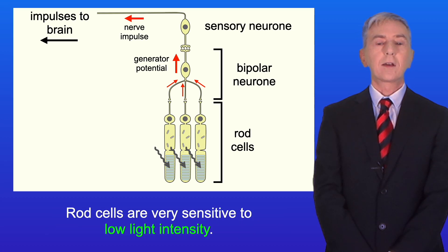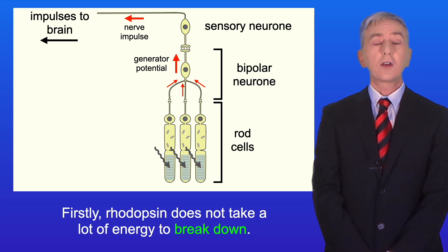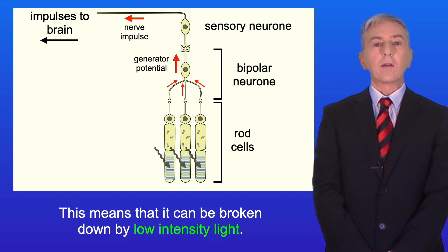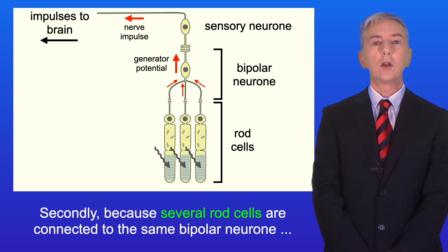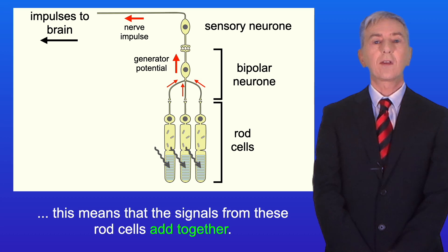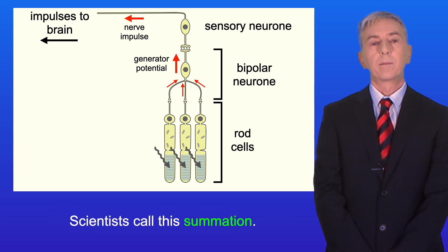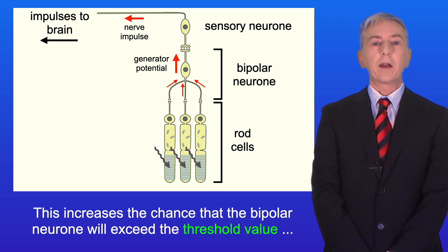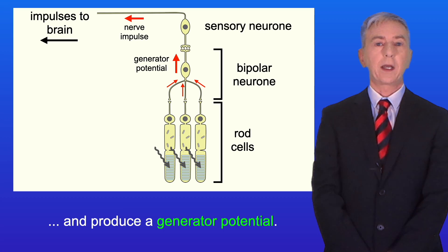Rod cells are very sensitive to low light intensity, and there are two reasons for this. Firstly, rhodopsin does not take a lot of energy to break down, meaning it can be broken down by low intensity light. Secondly, because several rod cells are connected to the same bipolar neuron, the signals from these rod cells add together — scientists call this summation. This increases the chance that the bipolar neuron will exceed the threshold value and produce a generator potential.